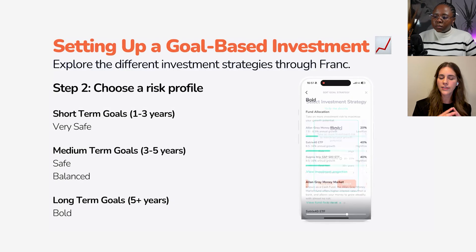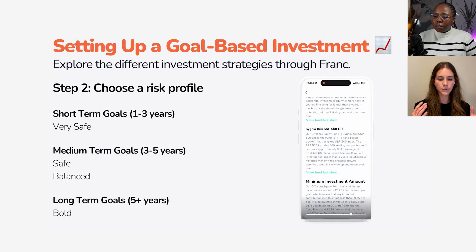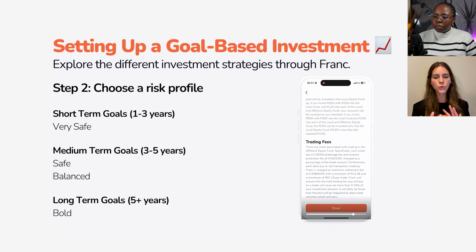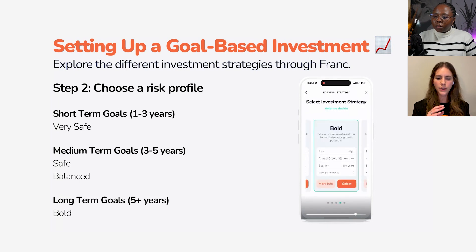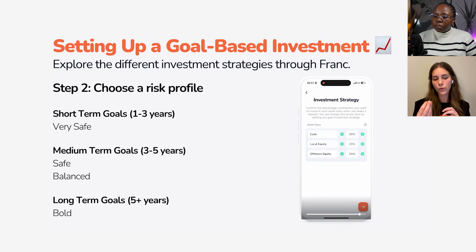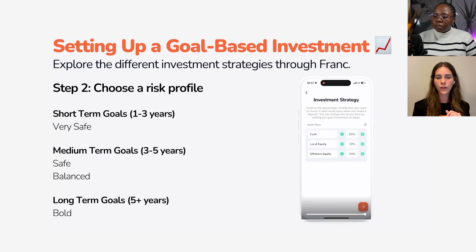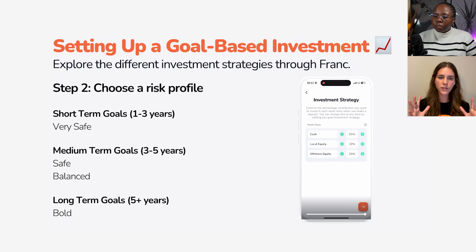When it comes to Very Safe, you're going to have 100% money market — it's a very low risk investment. As soon as you get to Balanced, you have kind of an even split of money market and equity, both local and offshore equity. You can also customize your investment strategy yourself, playing around with the different cash, local, and offshore equity allocations to find a risk profile that really works for you.